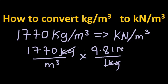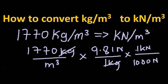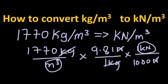Now, in order to get rid of the Newton unit so that it becomes kilonewtons, we're going to multiply again by 1 kilonewton over 1000 Newtons, because in every one kilonewton we have a thousand Newtons. Through this way we can cancel these units, and now we're left with kilonewtons in the numerator and cubic meters in the denominator. So now we can multiply and divide to get an answer.